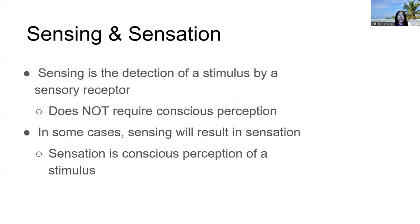Starting with sensory systems, we want to differentiate sensing and sensation — two similar words but very different concepts. Sensing is basically just the detection of a stimulus. If you put your hand near a hot stove, you'll be able to detect the temperature of that stove. That is sensing, and it doesn't require any conscious perception or appreciation of that sensory stimulus.